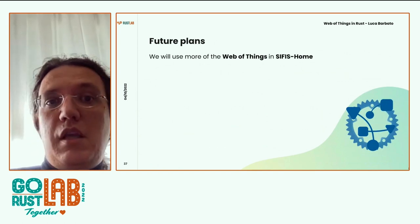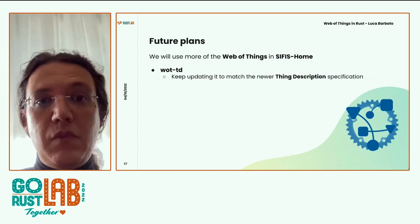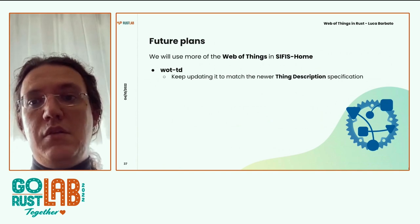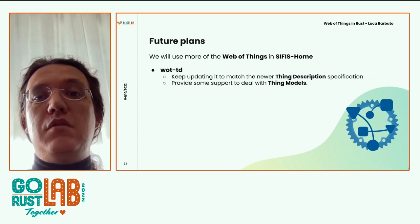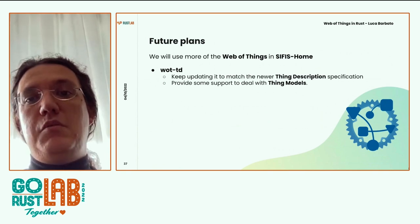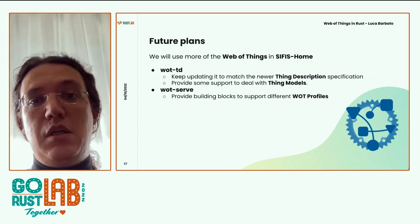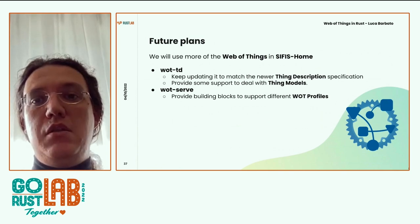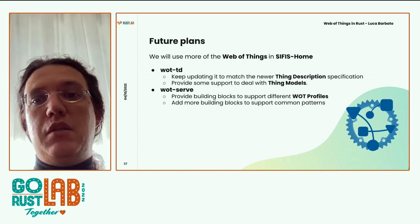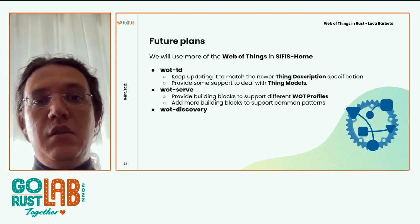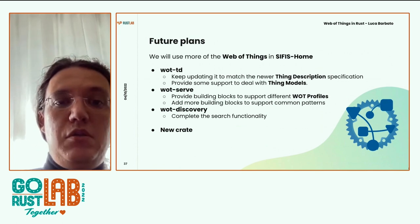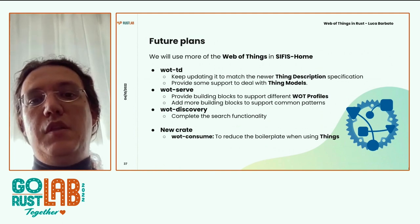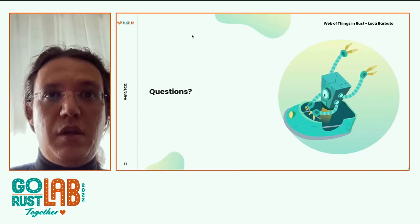This is what we currently have. `wot-td` is being kept updated — today I made the 0.2 release, so people can play with it. We might extend it to deal with another Web of Things concept, Thing Models. `wot-serve` might get additional building blocks so if you use WoT profiles you have something even more pre-made, and we try to cover more common patterns. `wot-discovery` — we want to complete the search functionality. A possible new crate, `wot-consume`, is going to reduce the boilerplate needed when consuming a Thing Description.